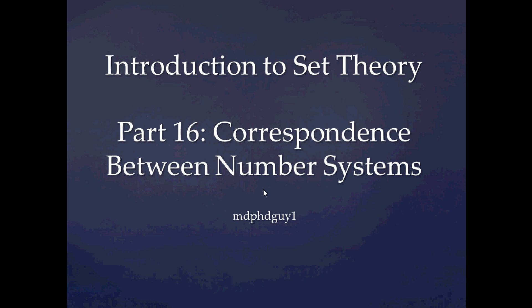We spent the last few videos constructing different number systems, and what I'd like to do in this video is try to put everything together and talk about how the different systems relate to one another. The number systems that we've constructed so far include the set of natural numbers omega, the set of integers Z, the set of rational numbers Q, and the set of real numbers R.